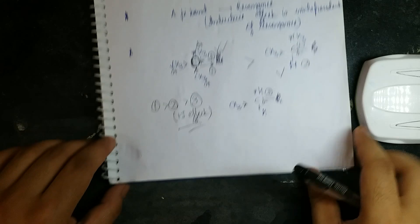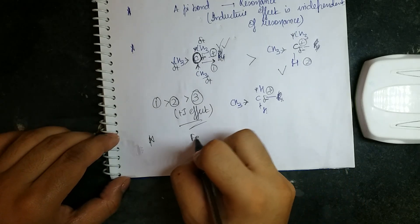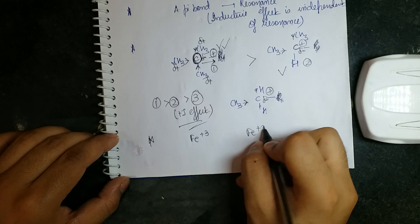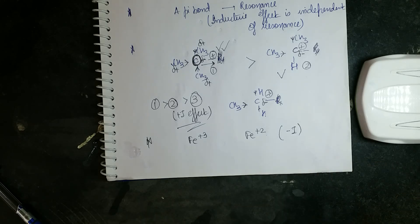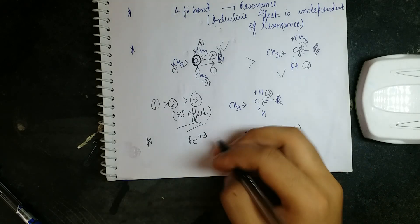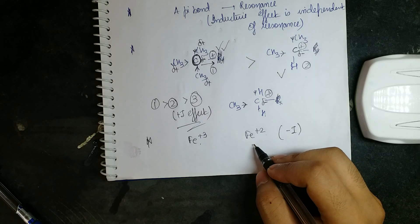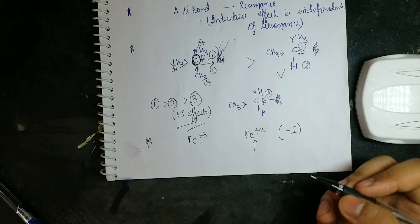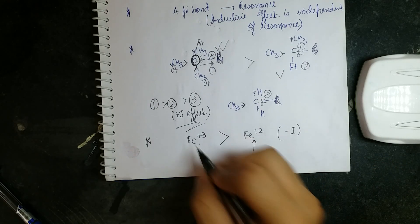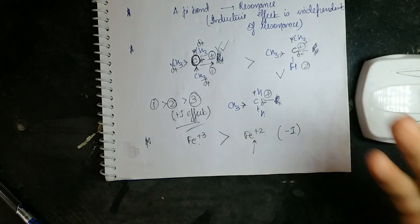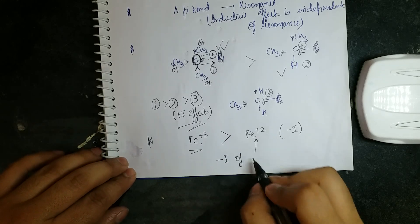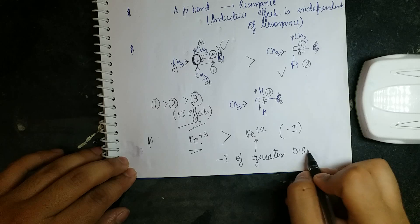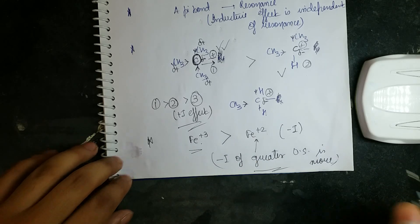Next, how to decide minus I effect based on oxidation state. Compare Fe³⁺ and Fe²⁺. Minus I effect means withdrawing electron density. Fe³⁺ has had three electrons removed, making it more electron deficient and more hungry for electrons. Therefore Fe³⁺ shows a greater minus I effect. The higher the oxidation state, the greater the minus I effect.